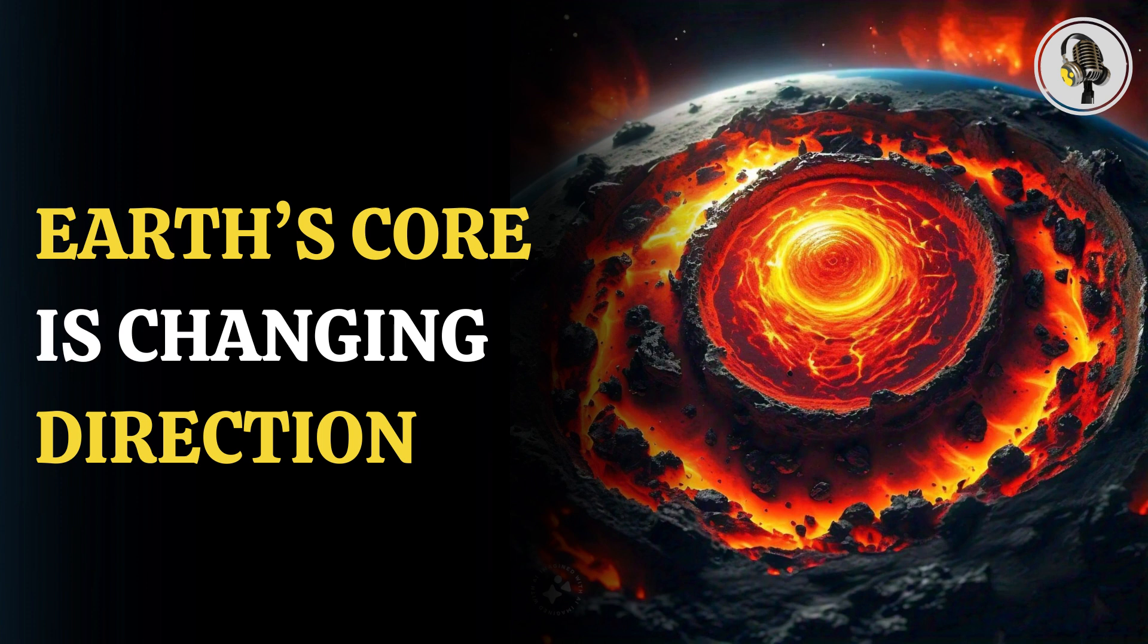Our planet Earth consists of three layers: crust, core, and mantle. The Earth's core again divides into two, the inner and outer. Let's look deeper into the Earth's inner core to understand what's happening.